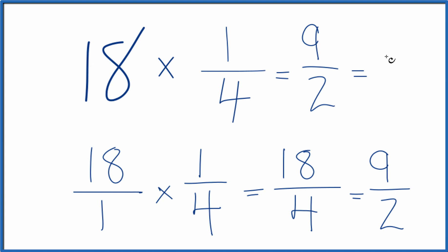2 goes into 9 four times. 4 times 2 is 8. We'd have 1 left over. Bring the 2 across. So 9 halves, that also equals 4 and one-half.